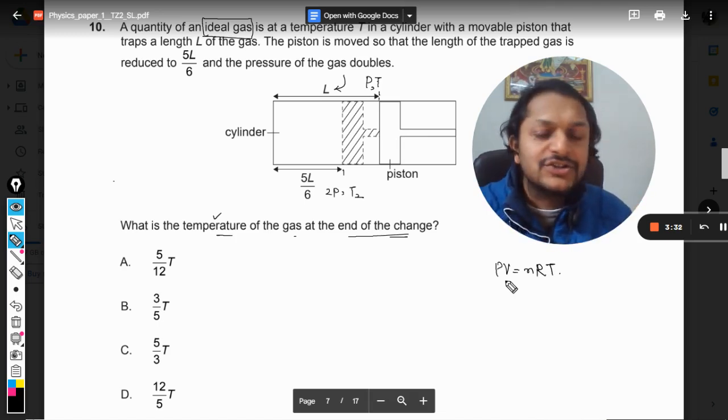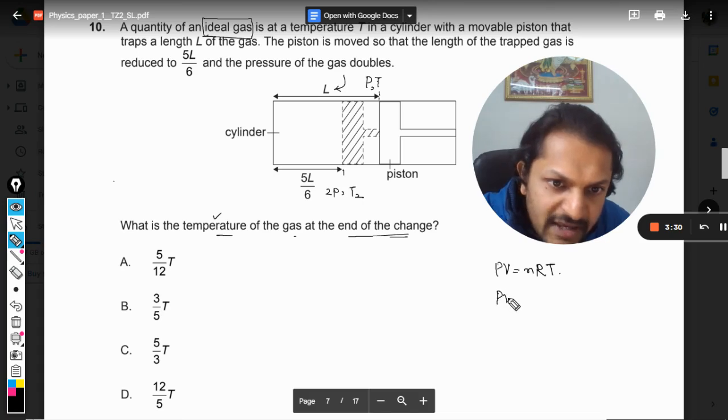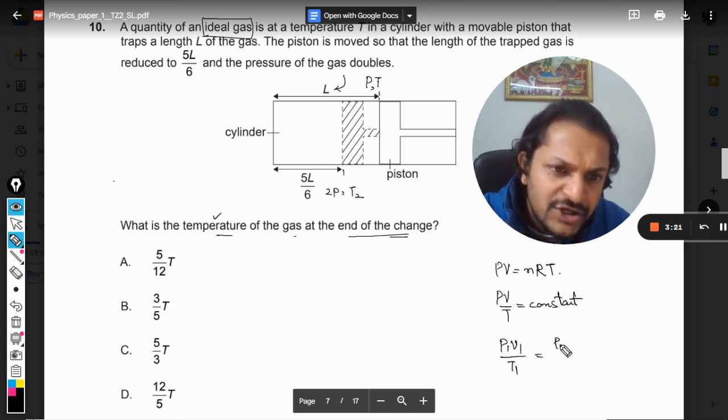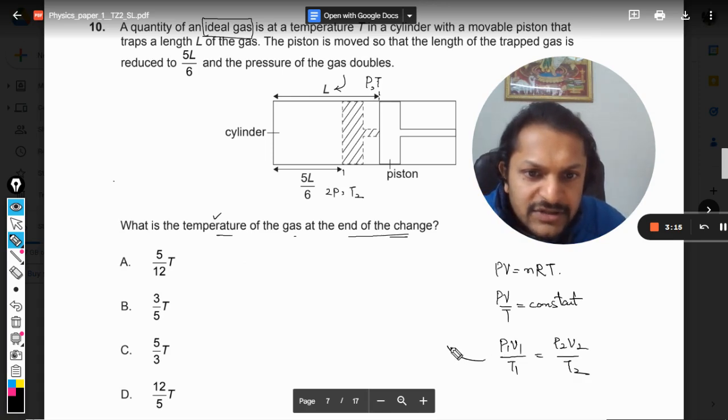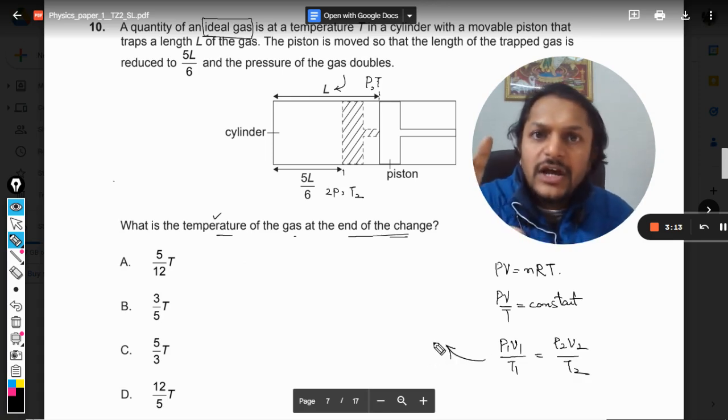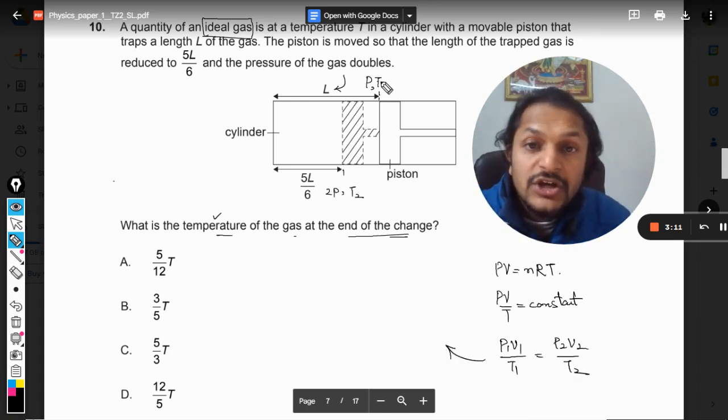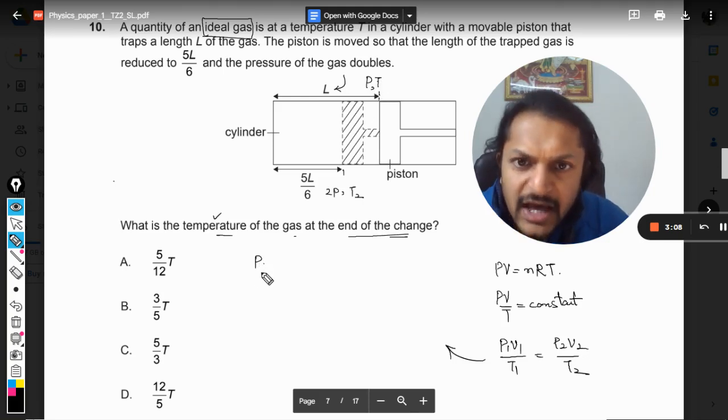So PV by T is constant in the process. So we can only say P1V1 divided by T1 should be equal to P2V2 divided by T2. Now so this I'm just now substituting the values and comparing case 1 and case 2. So the pressure here is P and the volume here, how are we going to find the volume?